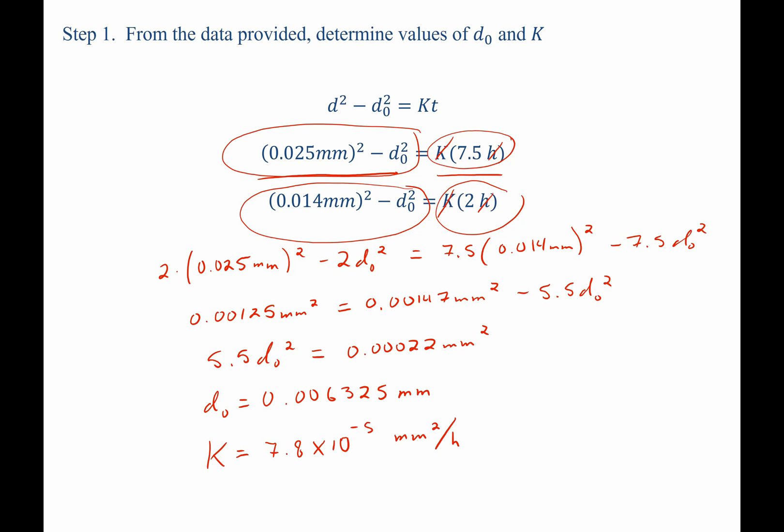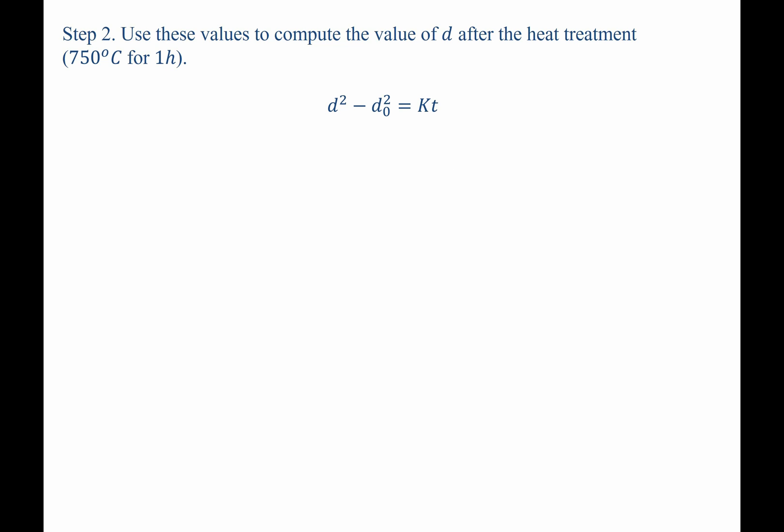Now we can move on to step two. Step two tells us to use these values from step one to compute the value of d, the grain size, after the new heat treatment. So we can rearrange our grain growth expression to solve for just d.